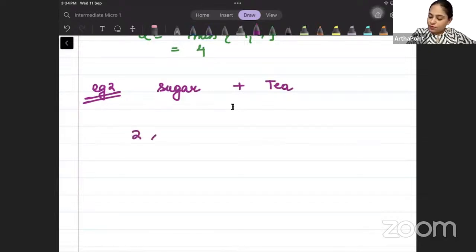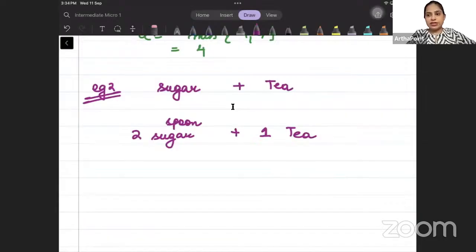We need 2 sugars, 2 spoons of sugar with 1 tea. We need 2 spoons of sugar with 1 tea. So ratio is not 1 to 1. One chai ke saath 2 chamach chini chahiye. Are you getting it? 2 teaspoons of sugar are required with 1 tea.